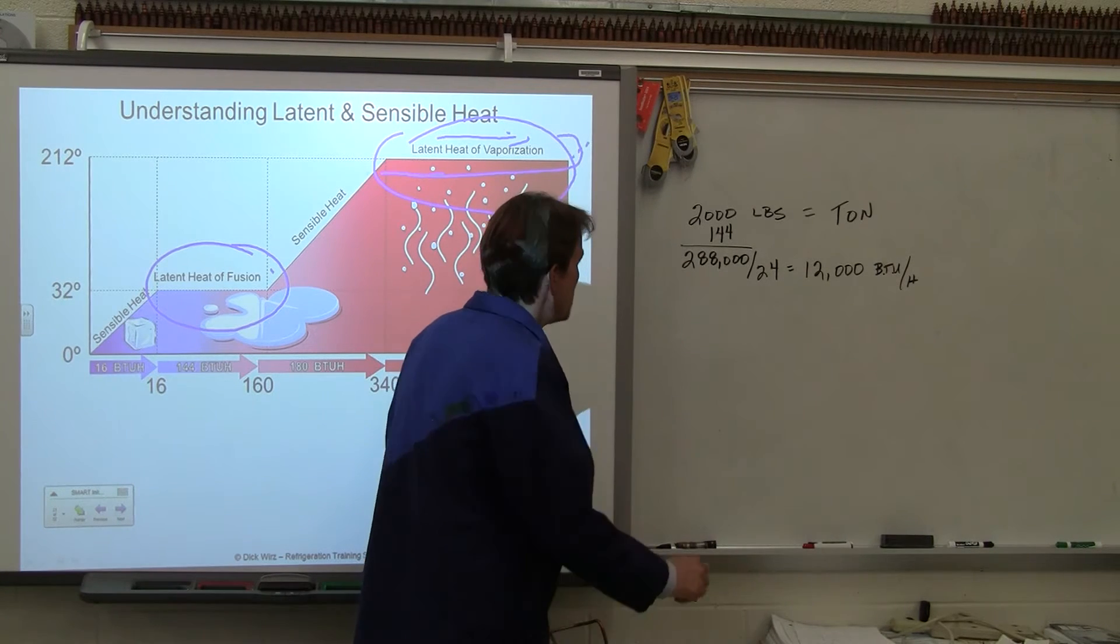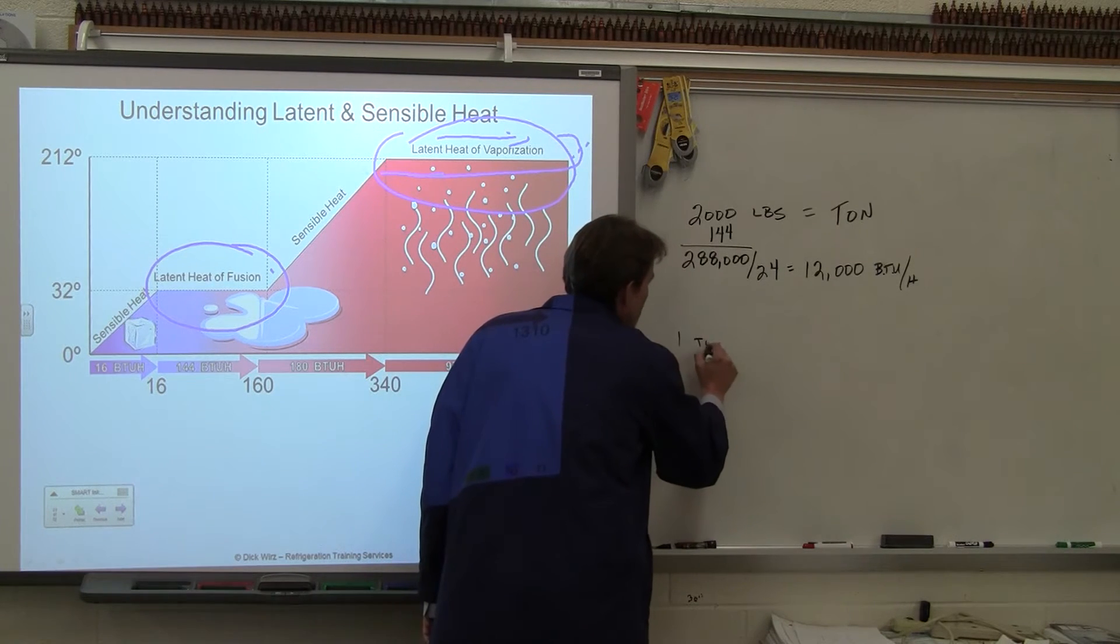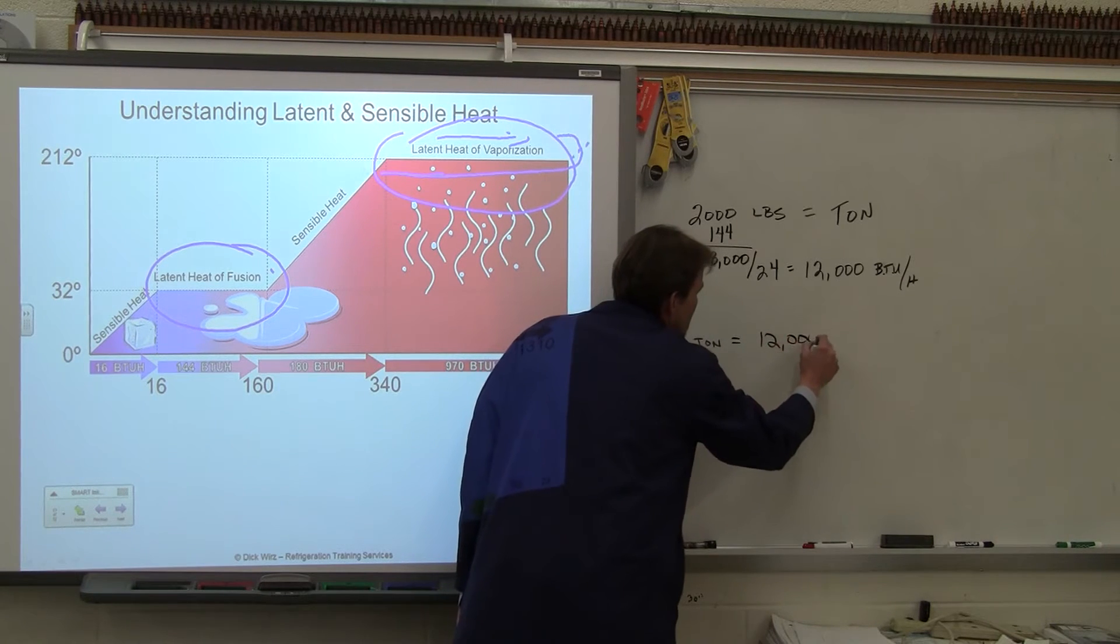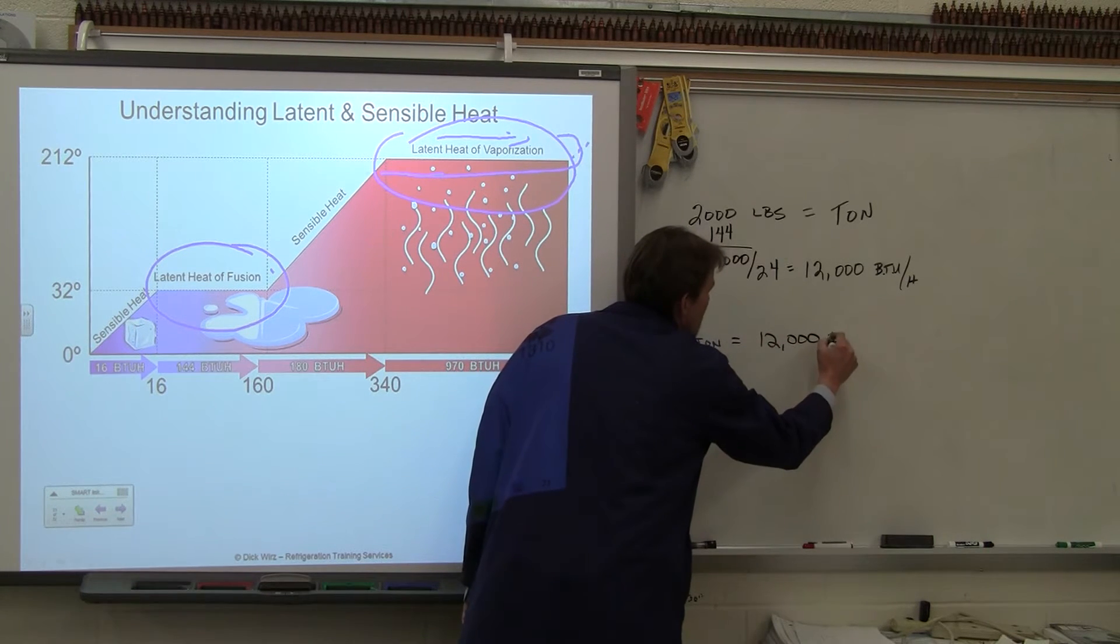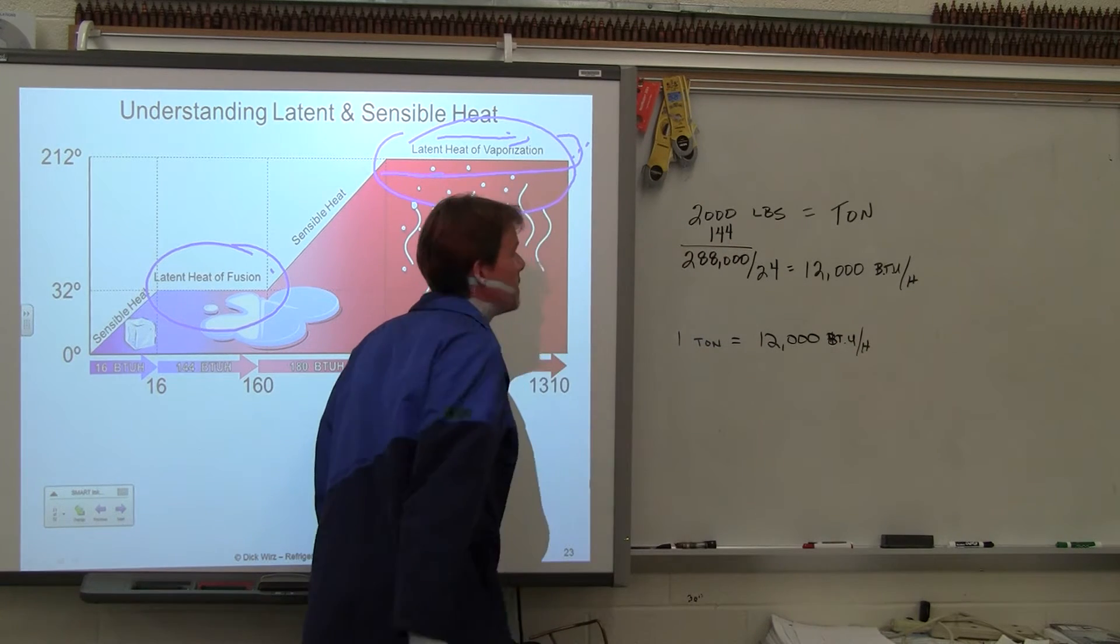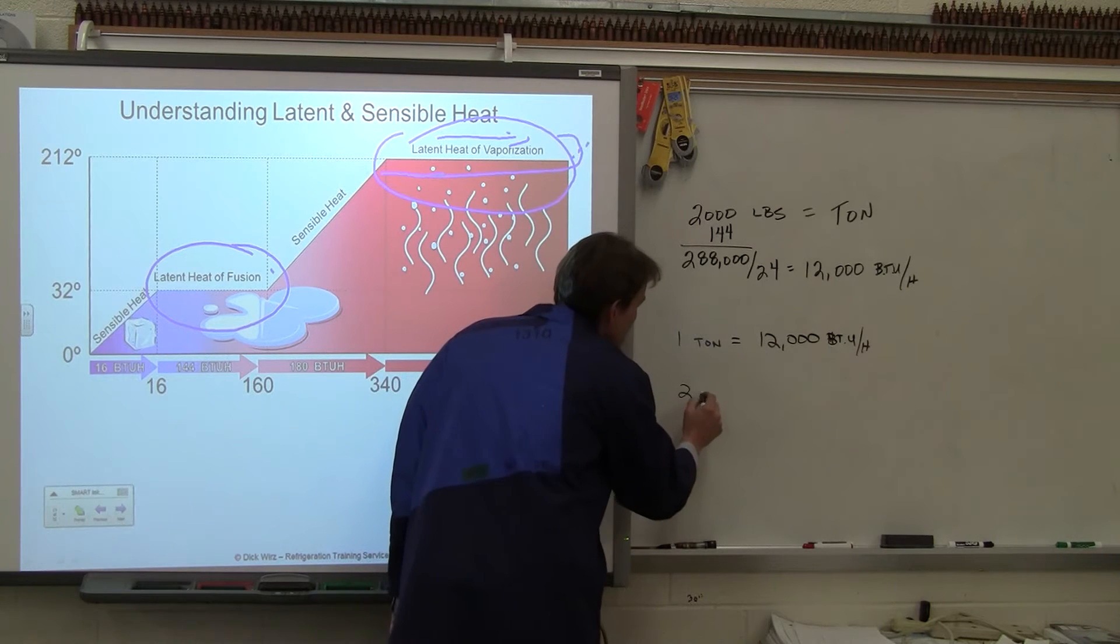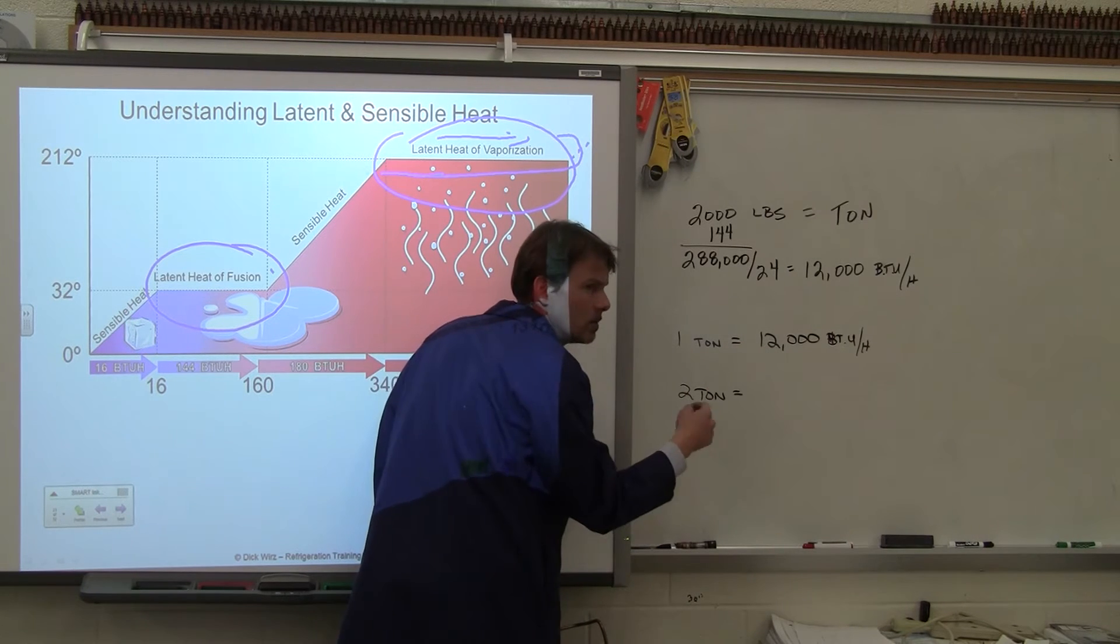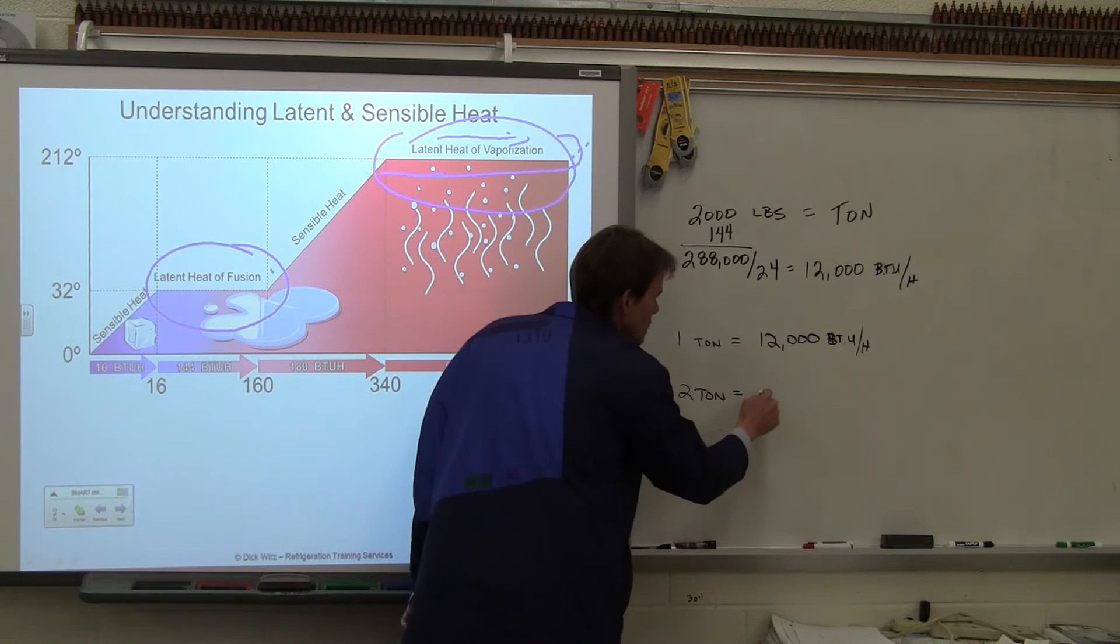That's where they get the 12,000 BTUs from. So if you hear somebody say they have a 1 ton unit, what that means is that unit can remove 12,000 BTUs worth of heat in a one hour period. And then if it's a 2 ton unit, then how many is that going to be? So 1 times 12,000, how many is 2 gonna be? 24,000 BTUs.